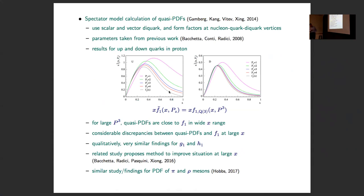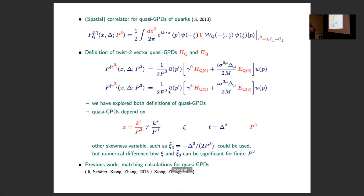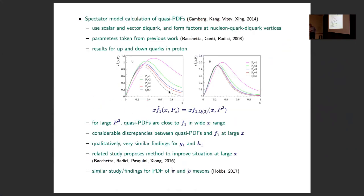Here are their results for the up and down quark in the proton. They show x times F1 tilde — what I call x times F1 quasi. For u and d quarks, the black curve is the standard PDF in that model, and the colored curves are quasi-PDFs for different nuclear momenta of 1, 2, 3, and 4 GeV. At somewhat larger nuclear momentum, say 2–4 GeV, there is a relatively wide range in x where the quasi-PDF is close to the standard PDF, but at large x you see very large discrepancies.